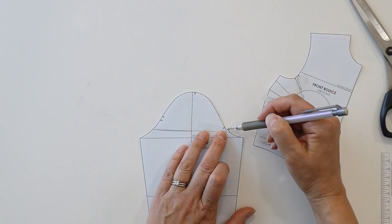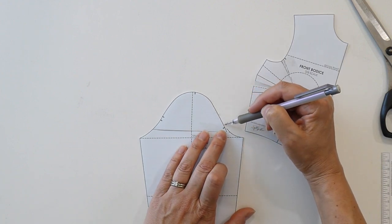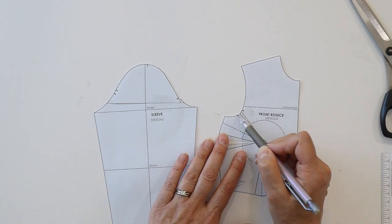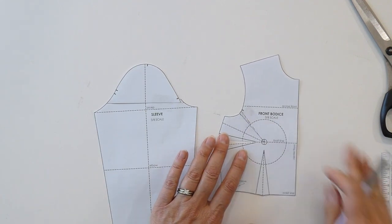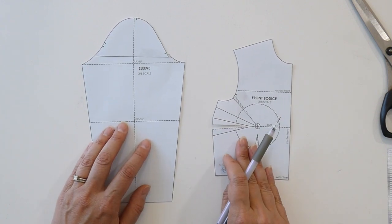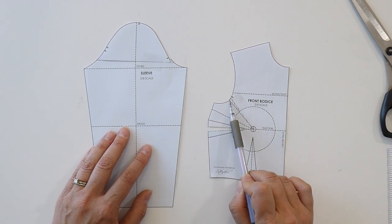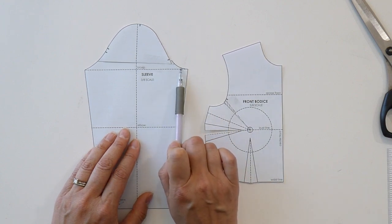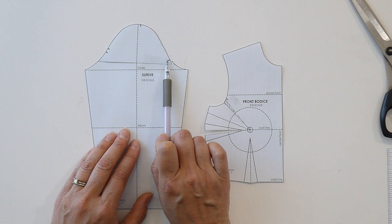And then of course I'm going to have to do some truing here. I do need to blend this in. And if you find that you get a point here on this side too, make sure you blend that in as well. But you can see here by doing it in this method I have actually reduced my front armhole length and the corresponding sleeve pattern so that they will again start matching.